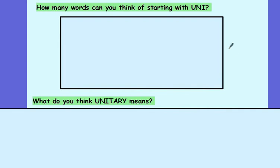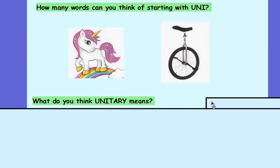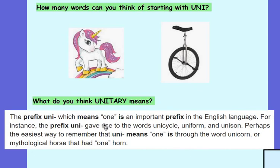OK, Year 8, can you pause the video for a minute and think of as many words as you can that start with the letters U-N-I? You might have thought of Unicorn and Unicycle — there are loads of other words you could have come up with, like University or Uniform. So what do we think Unitary means? The prefix Uni means one, and it's an important prefix in the English language, giving rise to words like Unicycle, Uniform, Unison, and Unicorn — the mythical horse with only one horn. So Unitary means one.